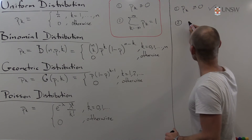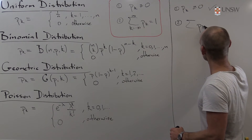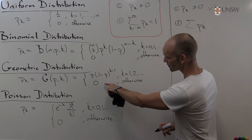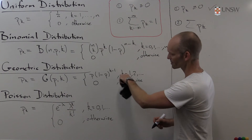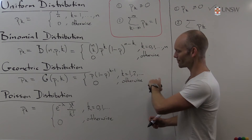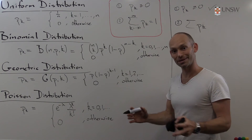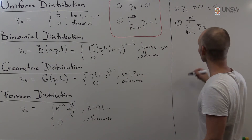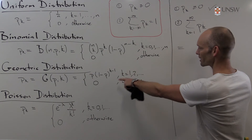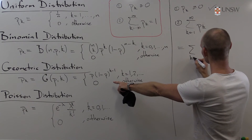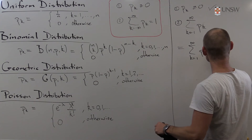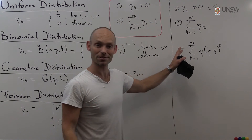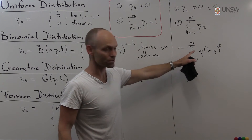What about the sum of all of these? We have p(k), and out of all the infinitely many k's we have to sum over, only those where k is 1, 2, 3, and so forth give something non-zero. So k goes from 1 to infinity. p(k) in this case is p times 1 minus p to the power of k minus 1. This looks a bit scary, but we have a shortcut — this is just a geometric sum.